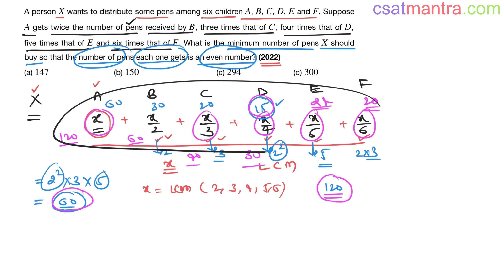For this sum to be minimum, minimum number of pens, least number of pens, X should be minimum, X should be least. And X should be common multiple of 2, 3, 4, 5, 6. If it is not multiple, you would be getting some decimals here. You cannot give 0.5, 0.7 to these children, right?